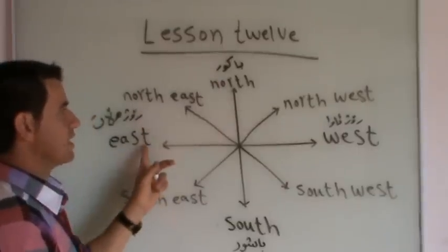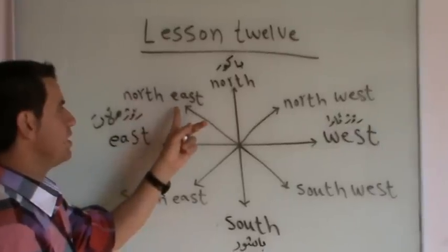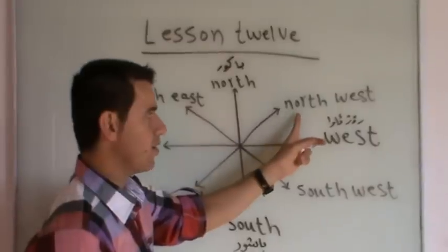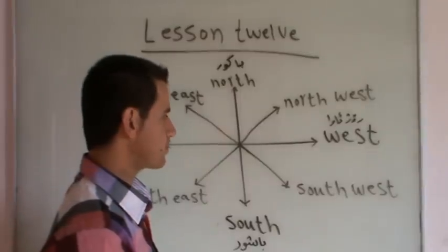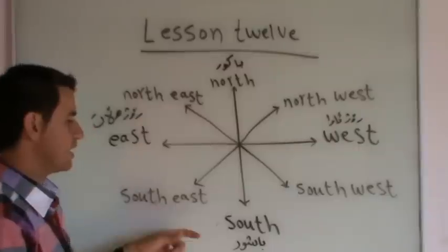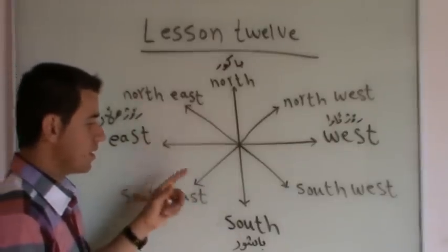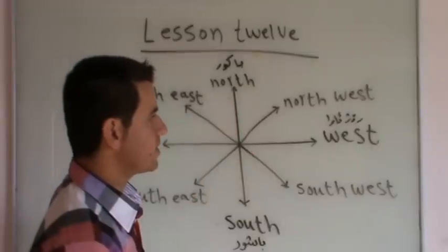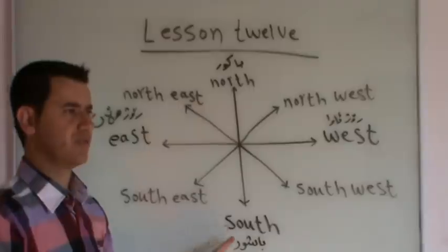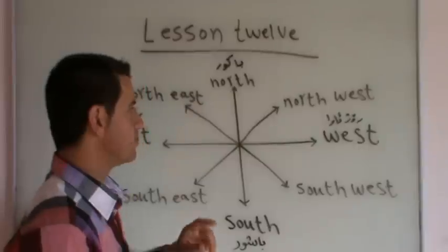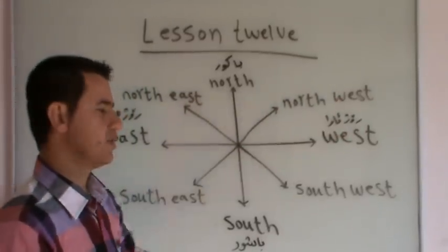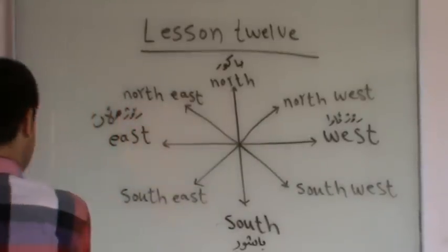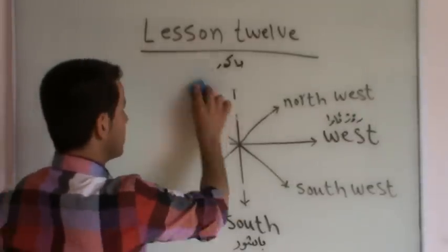Northeast, Bakuri Rochalat. Southeast, Bashuri Rochalat. Northwest, Bakuri Rojava. Southwest, Bashuri Rojava. These are the directions in English: North Bakur, South Bashur, East Rochalat, West Rojava, Northeast Bakuri Rochalat, Southeast Bashuri Rochalat, Southwest Bashuri Rojava. These are the directions, Ar-Astakhan. In this lesson we also study numbers from zero.